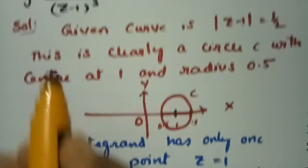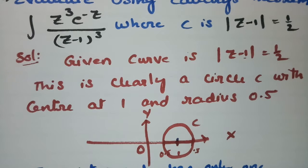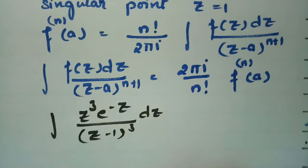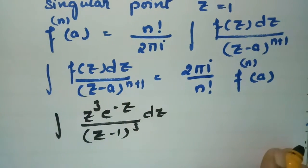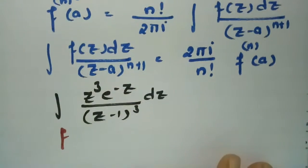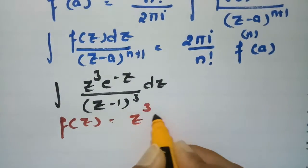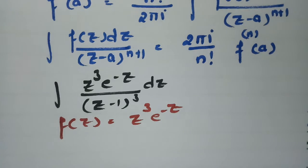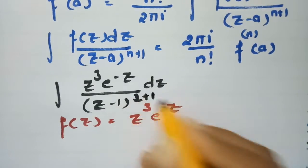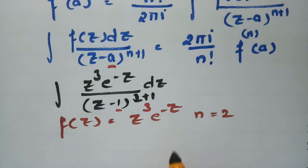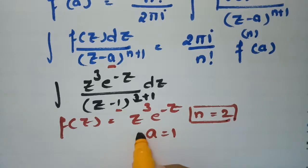The question requires evaluating the integral of z³e^(-z) divided by (z minus 1)³ dz. Comparing with the formula, f(z) equals z³e^(-z). The exponent 3 in the denominator can be written as 2 plus 1, so n equals 2. And a equals 1. These are all the values needed.